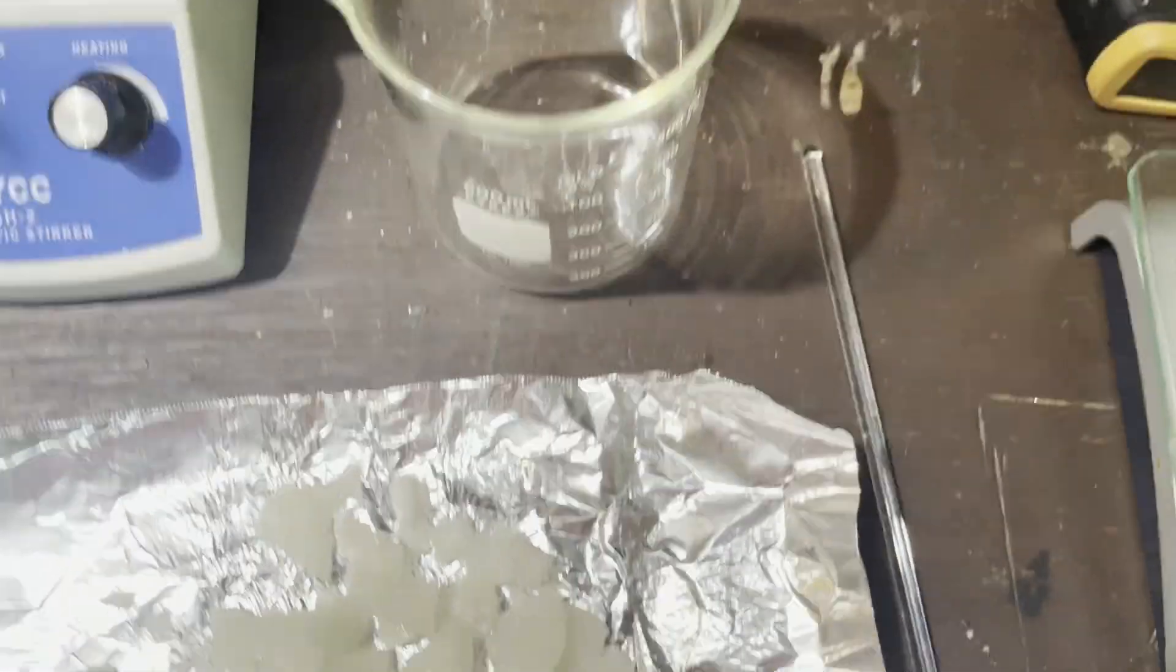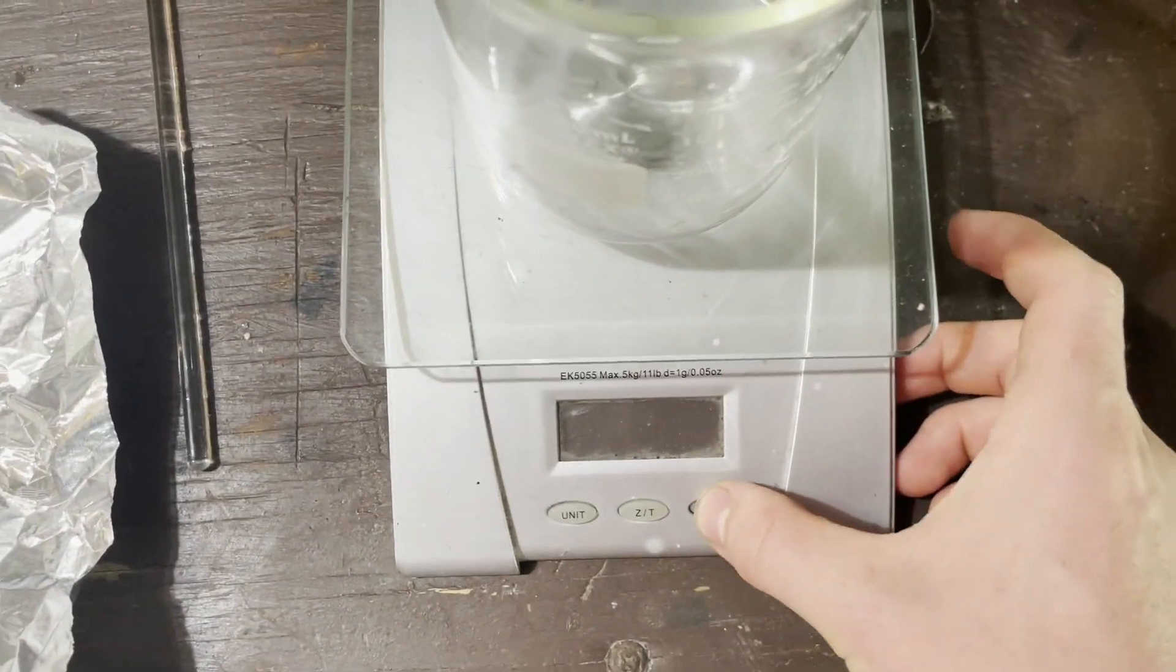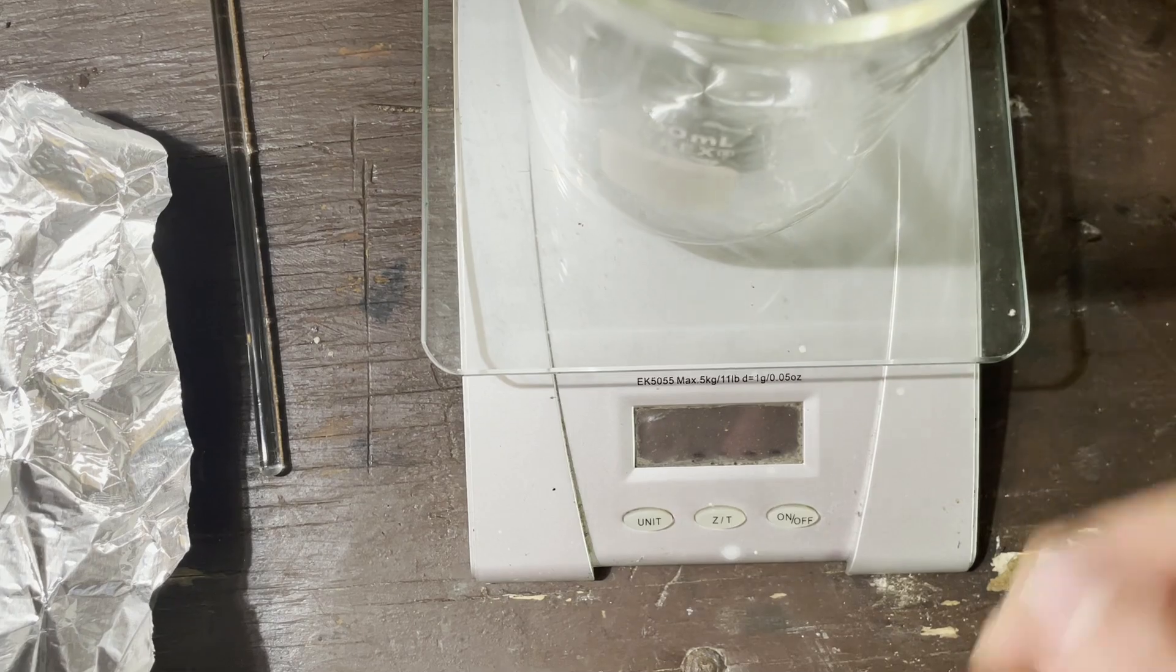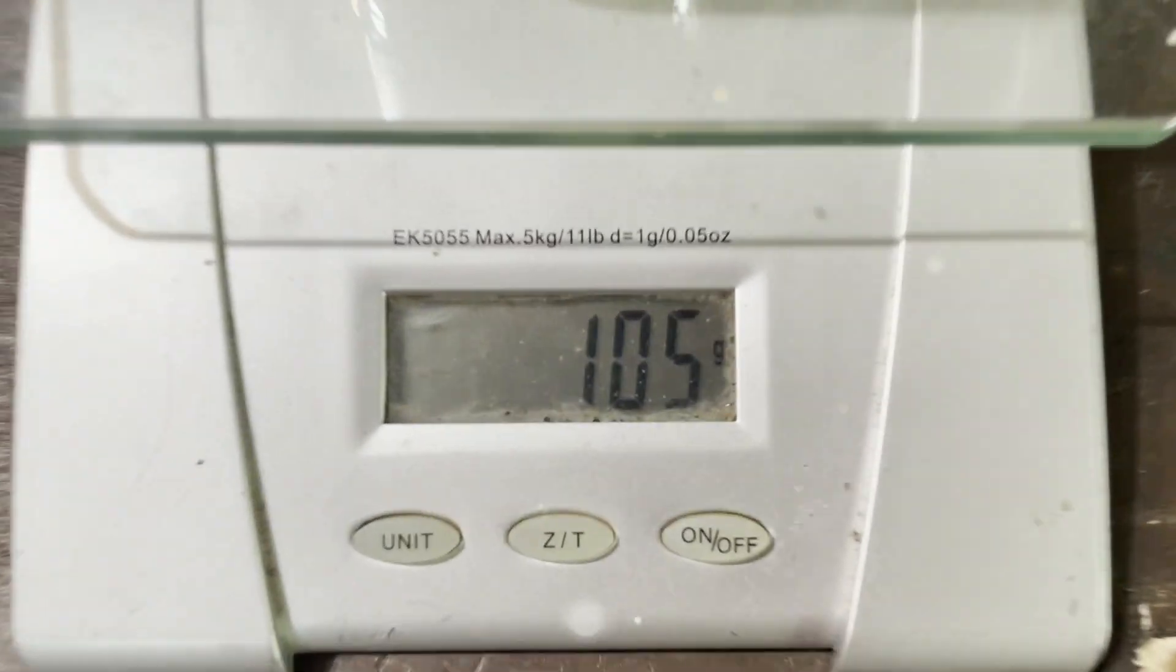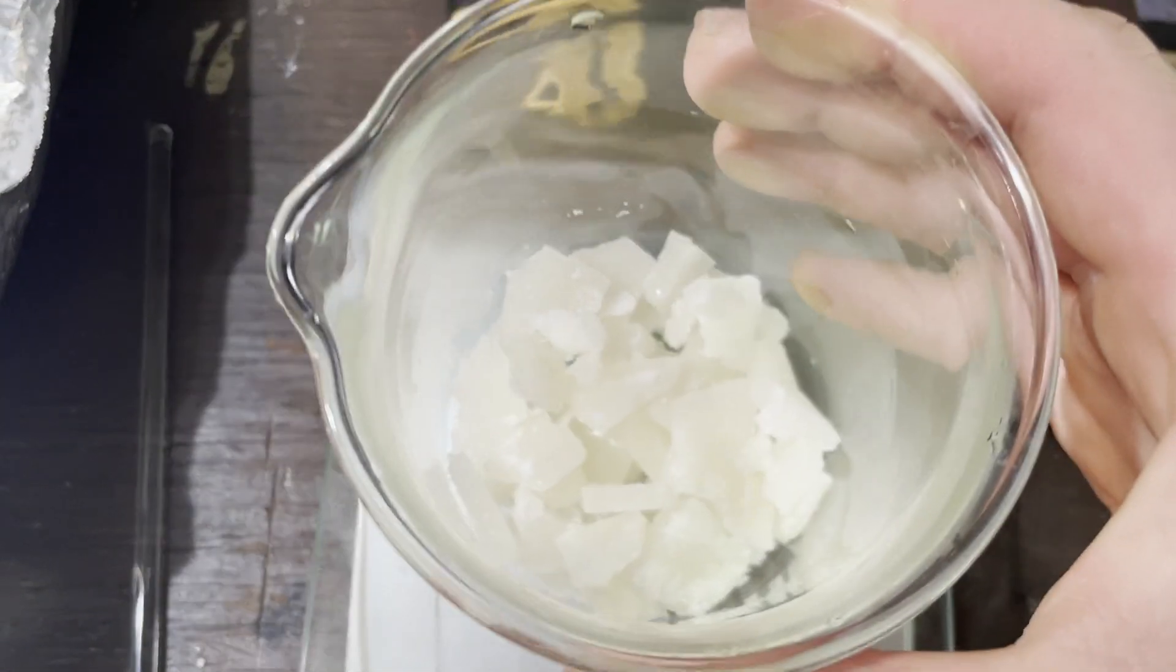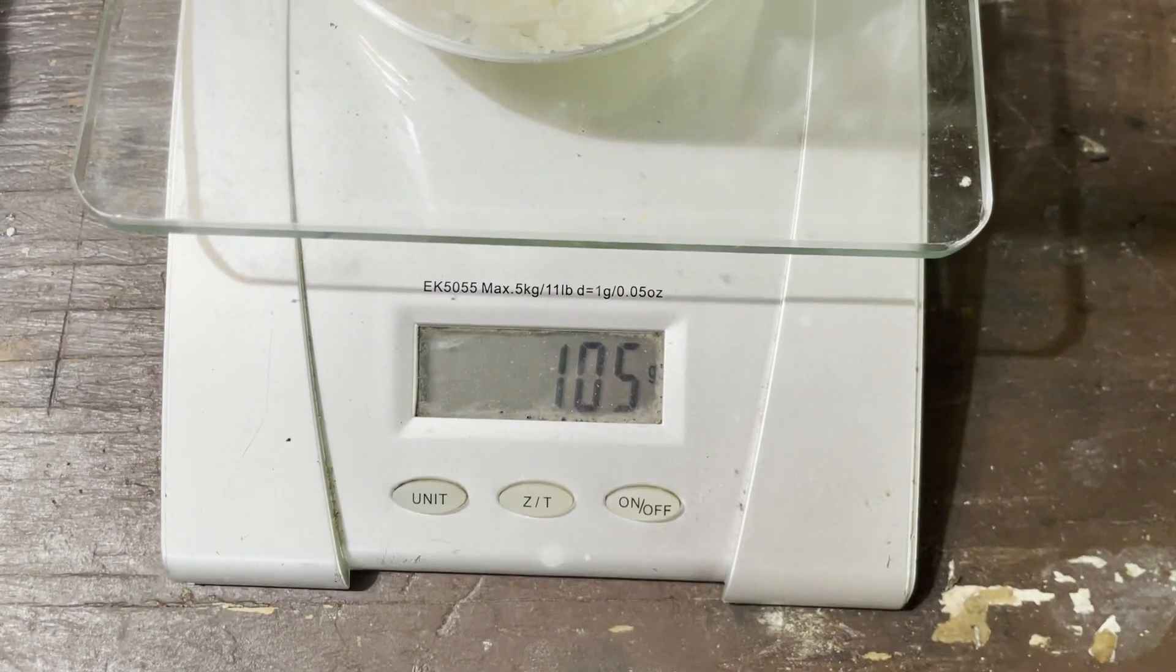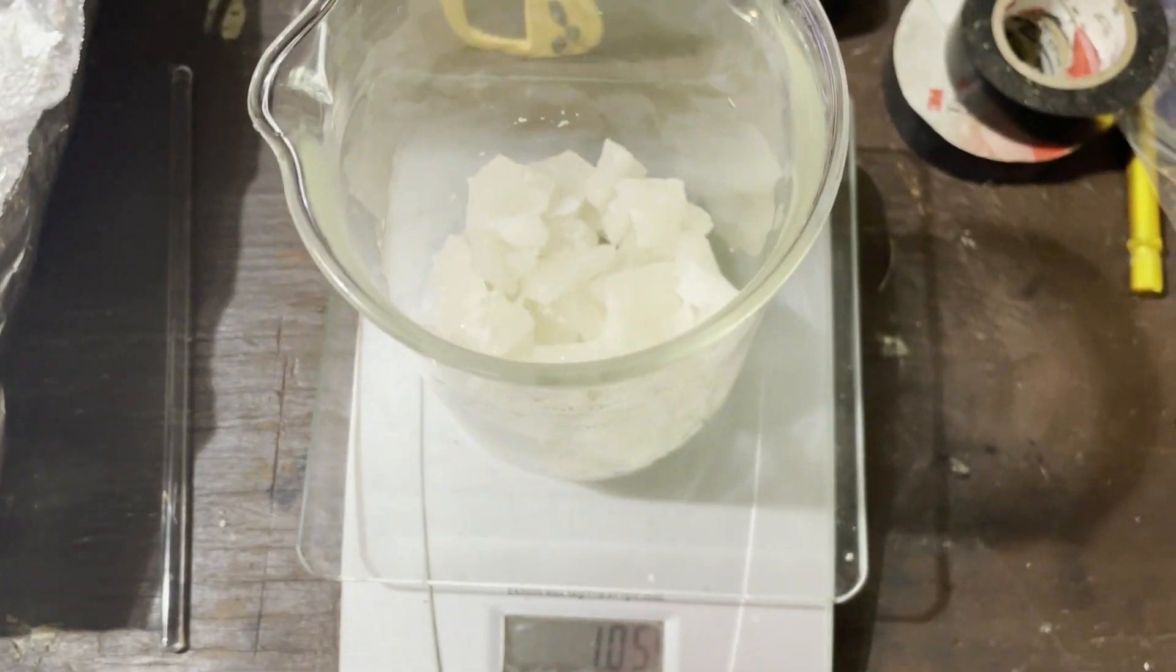It has cooled down enough to weigh it. So, let's zero out my scale. Alright. And, let's get this in. Alright. We have 105 grams of calcium chloride. Yep. Well, I'm going to go do the math and calculate the yield.